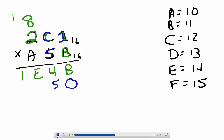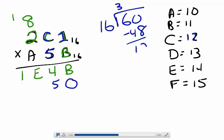C times 5, which equals 60, because it's like saying 12 times 5. And I find out how many times does 16 divide into 60. Well, 16 divides into 60 three times with a remainder of 12, or C.